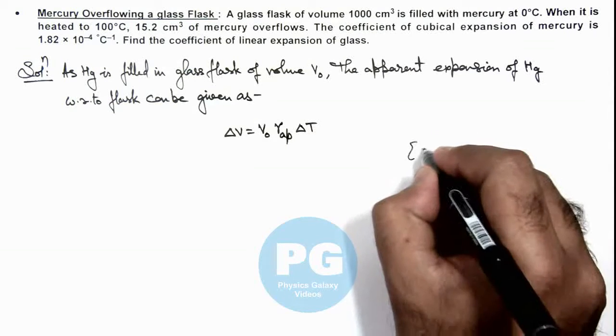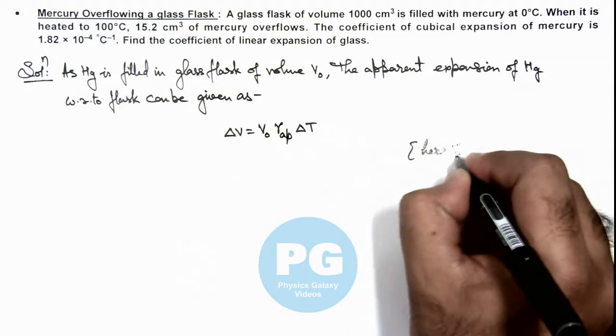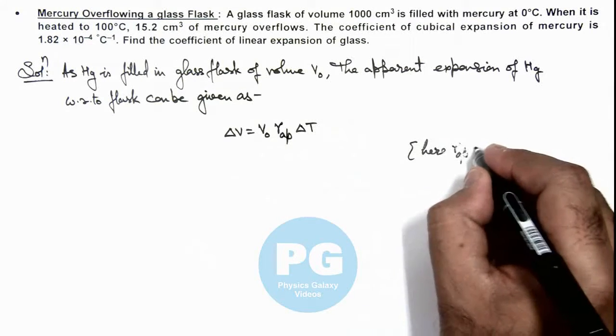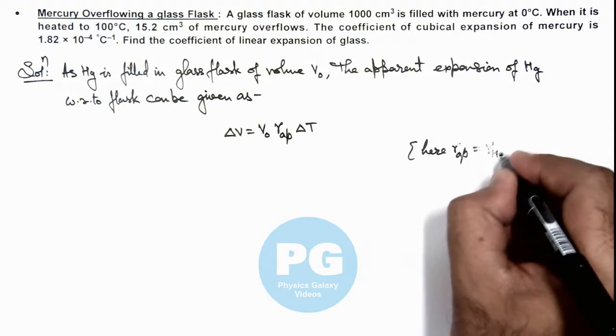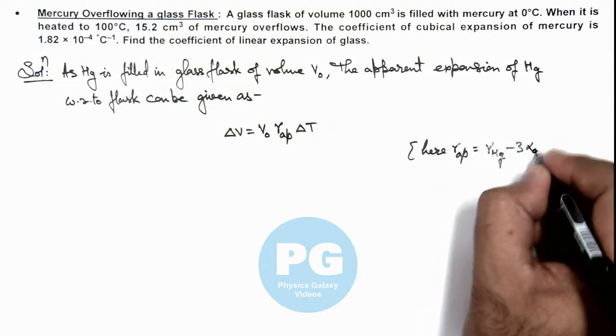And we know here the value of γ_apparent, the apparent coefficient of expansion of mercury with respect to glass, is written as γ_mercury - 3α_glass.